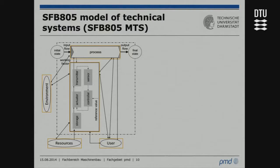This is an overview of the whole model. You already know the process and the appliance. There are additional elements: the environment, resources, and the user. We also have to model the relations between them — there are intended and unintended interactions. Additionally, the appliance model contains functional elements: storage, actuator, transmitter, controller, and sensor for the active systems, and material, energy, and signal flows.